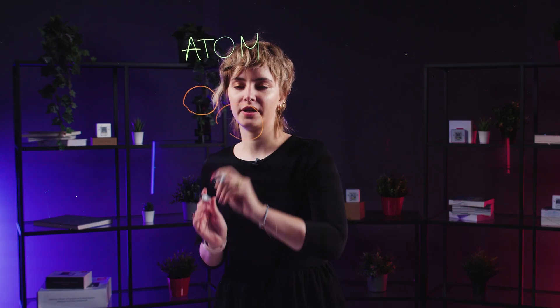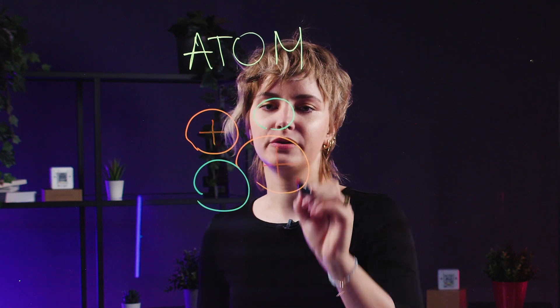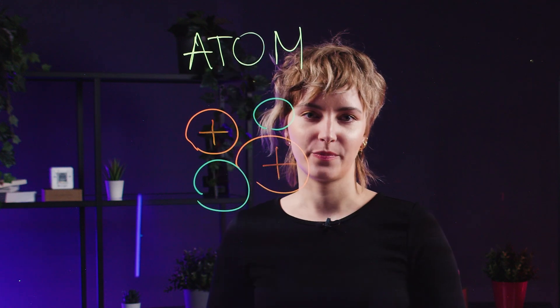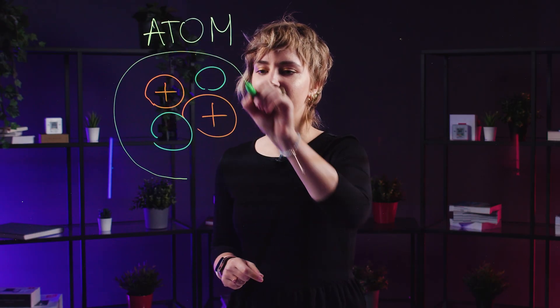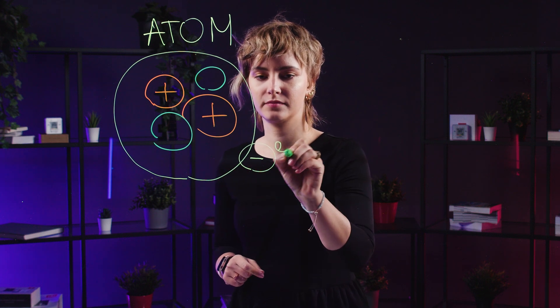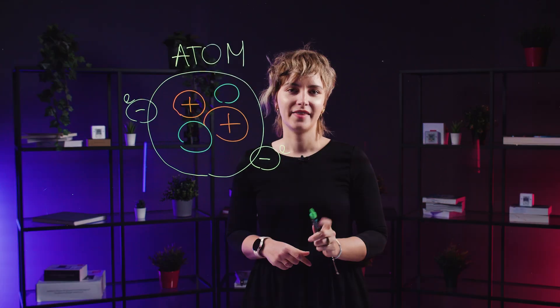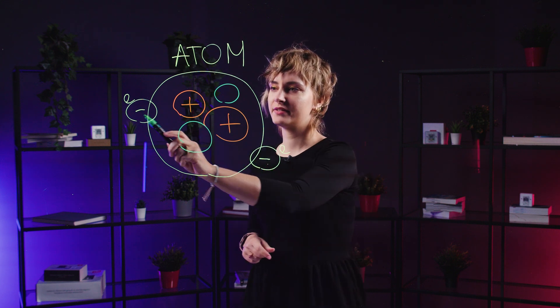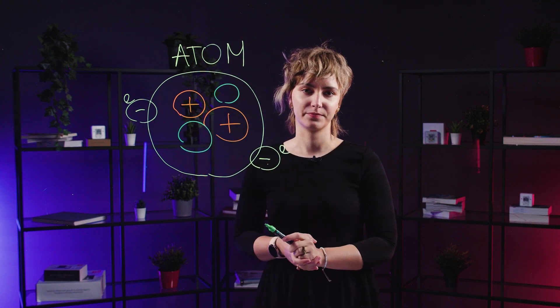Protons and neutrons are found in the nucleus at the center of the atom. Protons have positive charge while neutrons have no charge — they are neutral. Surrounding the nucleus are negatively charged electrons. The number of electrons equals the number of protons in a neutral atom.